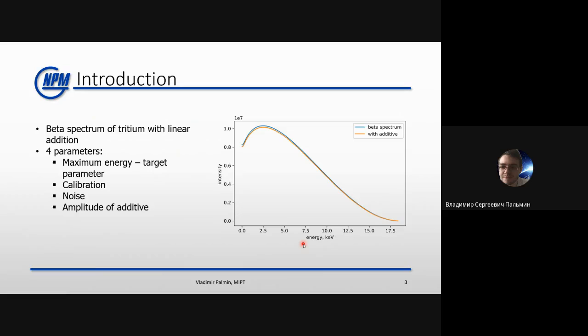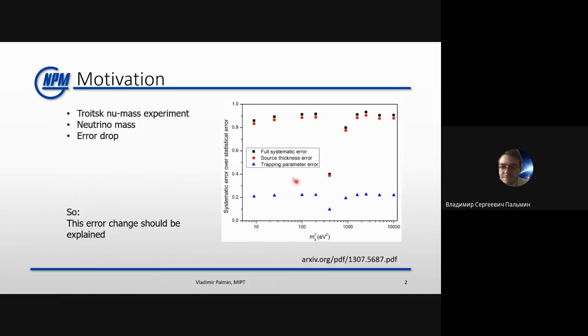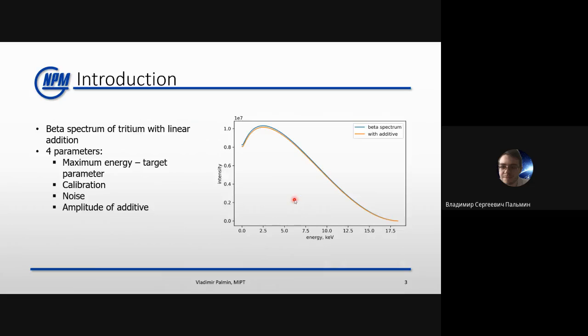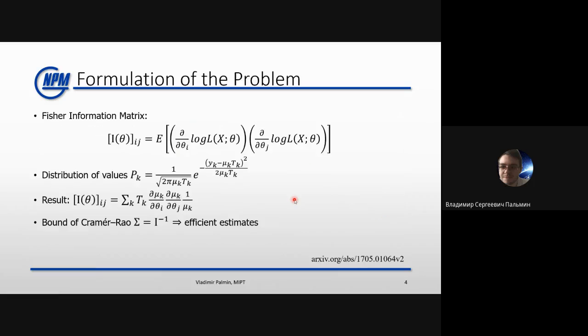A few more words about the Troitsk nu-mass experiment. A beta spectrum of tritium was used with some linear addition representing additional effects like trapping effects or source thickness, representing a systematic error. As a result we have four parameters: the maximum energy — the target parameter since it's correlated with the neutrino mass — and three nuisance parameters: calibration, noise, and the amplitude of this additive.